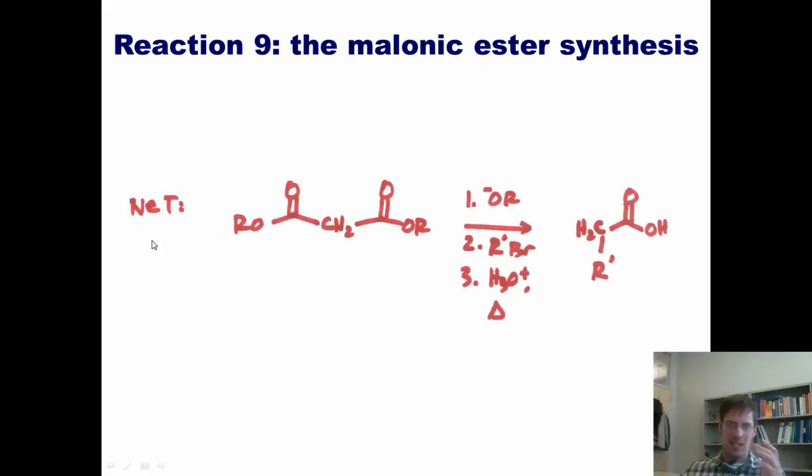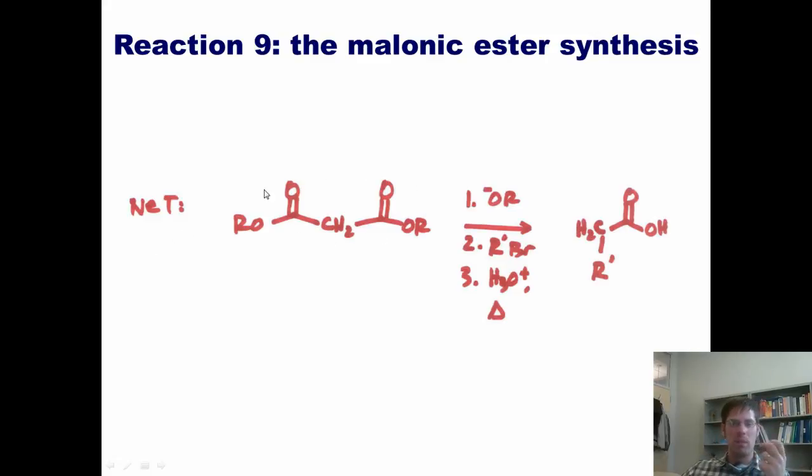So what is the net reaction? I start with a malonic ester, hit it with base, strips this proton, that negatively charged carbon gets alkylated with an alkyl halide, and then ultimately stir with water and acid at high temperature. It hydrolyzes both of these esters, converting them to OHs, and then one of those ester groups gets torn off as CO2 to arrive at this carboxylic acid product.